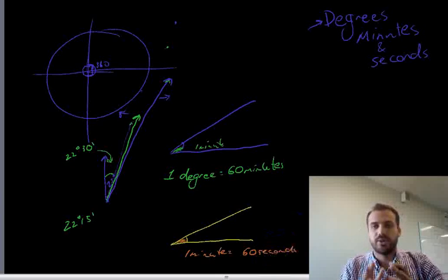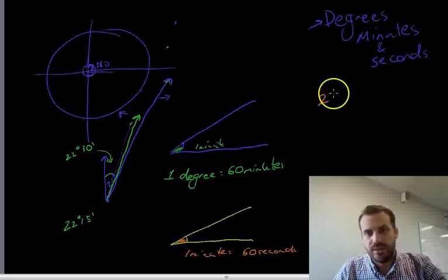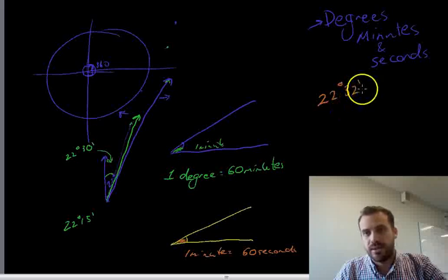1 minute is equal to 60 seconds. So, you can end up with someone telling you to go in this particular direction. 22 degrees, 32 minutes,